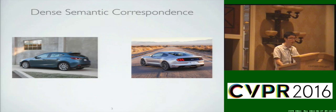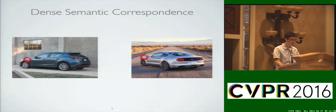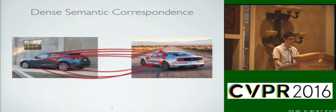For instance, given these two images of cars, we will want our system to match wheels to wheels, headlights to headlights, mirrors to mirrors, and do so in a dense pixel-wise manner.